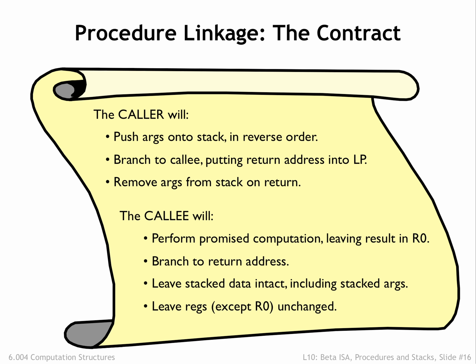Preserve the values in all registers except R0, which holds the return value. So the caller can assume any values placed in registers before a nested call will be there when the nested call returns.